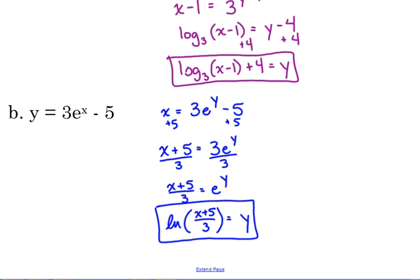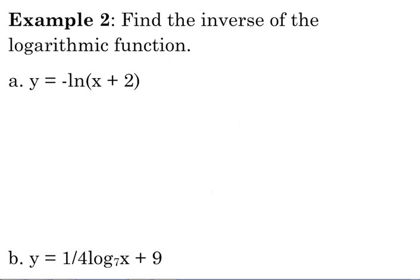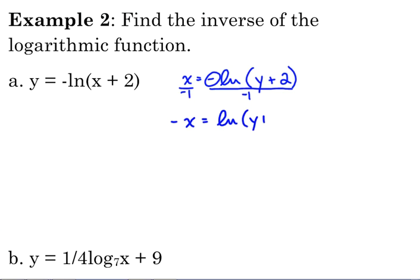Now let's go the other way — start with logarithmic equations and find their inverses. Our first one is y equals the negative natural log of (x plus 2). Start by switching x and y. The y is inside the logarithm, so we first get the logarithm by itself. There's a negative in front, so divide by negative 1: negative x equals the natural log of (y plus 2).